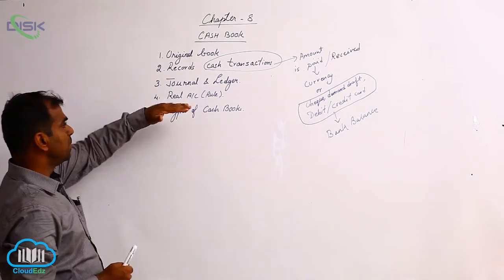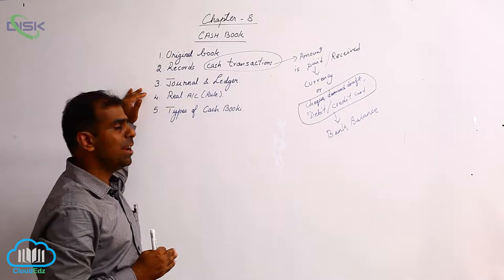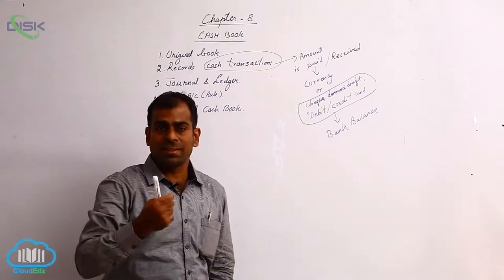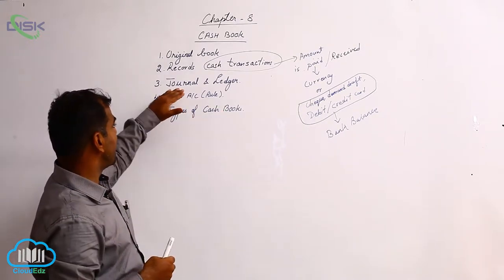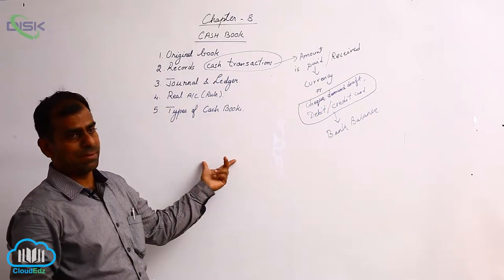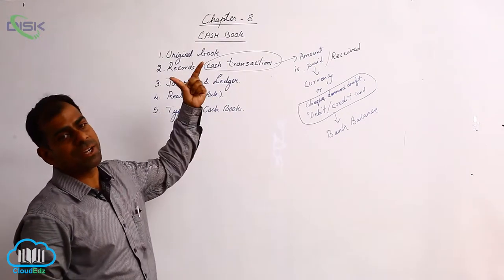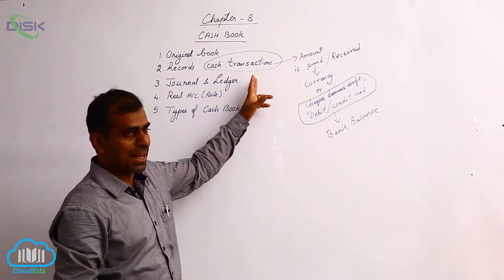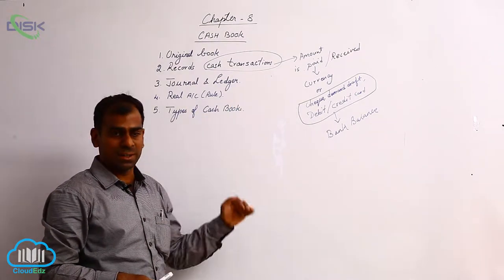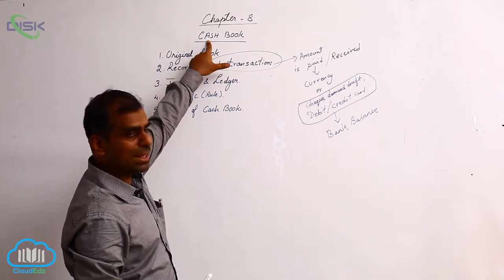Moving on, cash book is both a journal as well as a ledger. The simple reason for it being a journal is that you are using your cash book to record the cash transaction. The moment the transaction takes place, we immediately record it in our journal. Whenever the number of transactions are more, we use special journals. So whenever there is a cash transaction, it is recorded in this journal — which is nothing but the cash book.